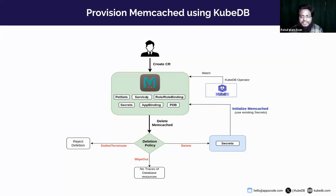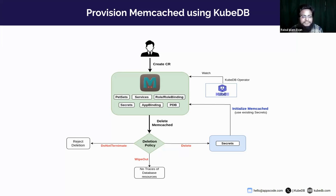KubeDB will create a service account, PetSets, services, role binding, secrets, AppBinding, and PDB. Using the service you can connect to Memcached. Role binding handles necessary permissions like cluster role or cluster role binding. The PetSet runs the actual database. The PodDisruptionBudget ensures deletion or migration of instances happens in a synchronized manner. AppBinding stores the necessary information to connect to the Memcached instance, mainly used by other apps like KubeStash. If you enable monitoring, it will also create a ServiceMonitor.